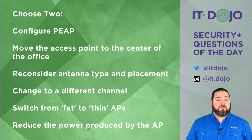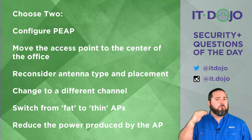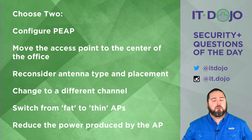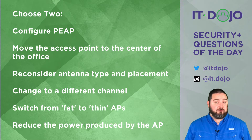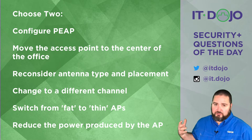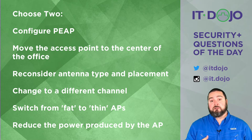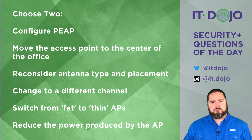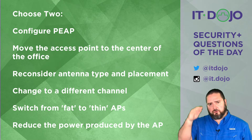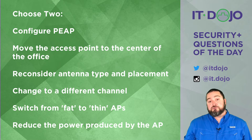Choice number two: move the access point to the center of the office. In this particular scenario, your issues are more vertical than horizontal, so moving your access point to the center of the office is highly unlikely to be your solution. From an exam perspective, it's about choosing the best answer, not just any plausible one — and something as simple as moving it to the center of the room isn't going to solve your vertical RF coverage problems.